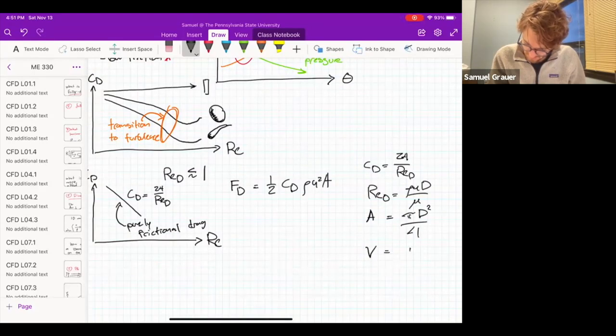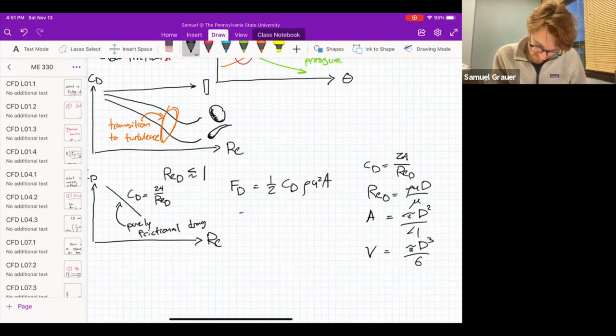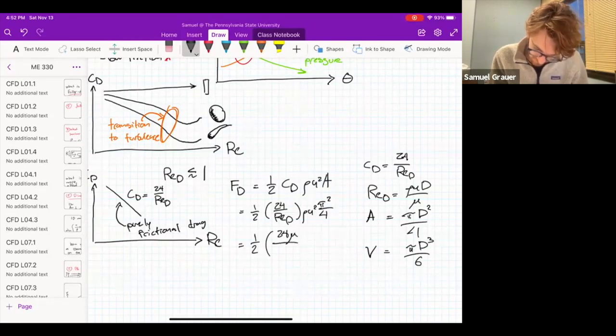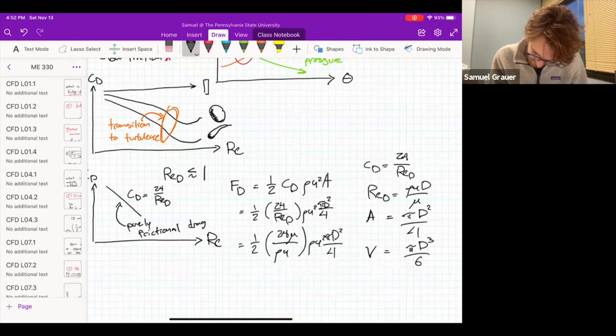And the area is going to be equal to pi D squared over four. And I will note for later that the volume is going to be pi D cubed over six. So if we substitute this in, we're going to have half 24 over Re D rho U squared times pi D squared over four. And we can substitute in our Reynolds numbers. We're going to have half 24 mu over rho U D times rho U squared. Oh, I'm missing a D here. Pi D squared over four.